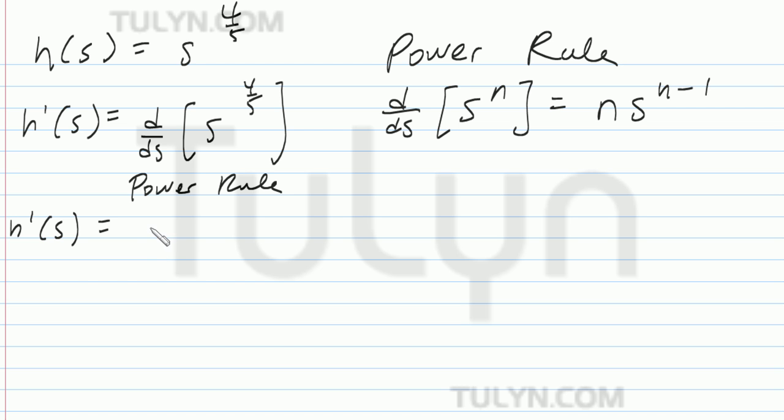So basically it's going to be the exponent of four-fifths times s to the four-fifths minus 1. So h prime of s is equal to four-fifths s to the four-fifths minus 1.